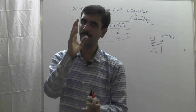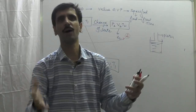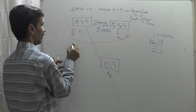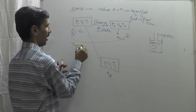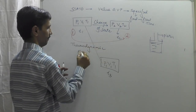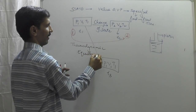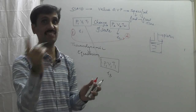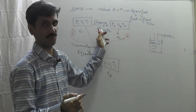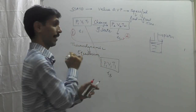Which type of equilibrium are we talking about? The properties involved are thermodynamic properties, and that is why we call it thermodynamic equilibrium. When the values of the variable property do not change with time, that is called thermodynamic equilibrium.